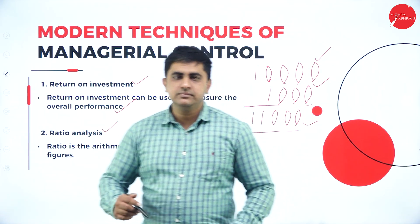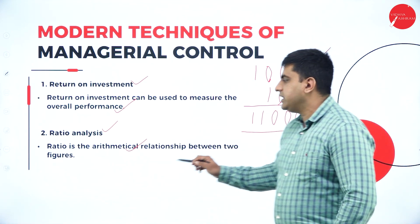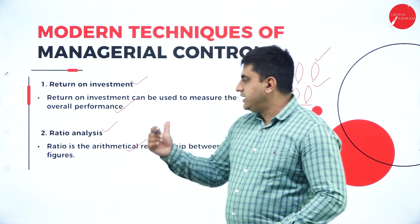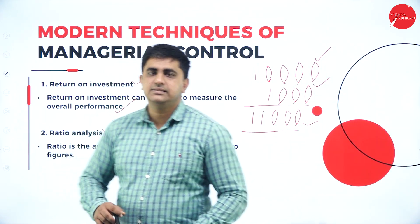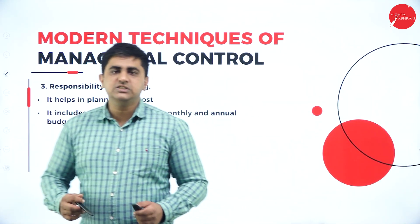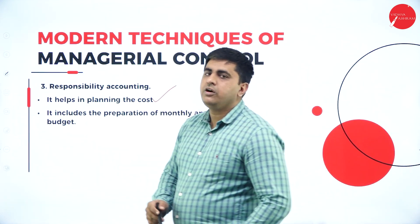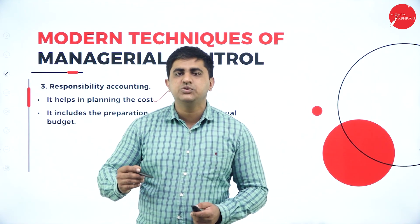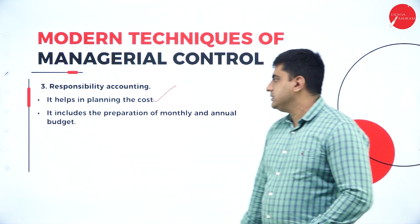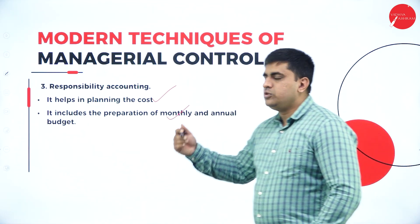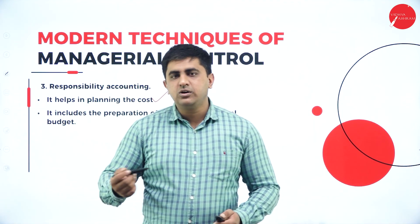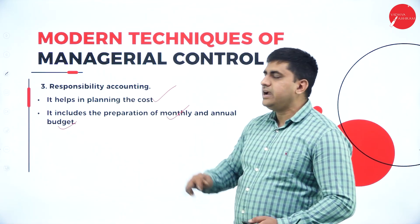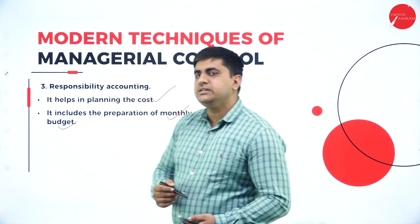Ratio analysis uses the mathematical relationship between two figures — sales ratio, cost ratio, volume ratio, profit ratio, revenue ratio — for controlling. Responsibility accounting helps in planning the cost before activities begin. It includes preparation of monthly and annual budgets, and you control activities so they take place within those budgets — taking responsibility for cost and ensuring operations stay within the decided cost plan.